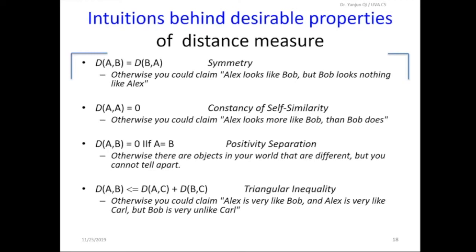Okay. So then positive separation. If the distance between A and B equals zero if and only if A equals B. Because you want to avoid if two, if you get distance between C and D equal to zero, but C and D are not the same. Which means using this distance measure, there's no way to tell apart C and D.